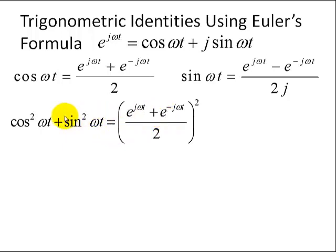So, here we just look at the cosine squared omega t. We use this definition of cosine of the complex exponentials, and substitute here, and we square it. We'll do the same thing with the sine, and we square it.